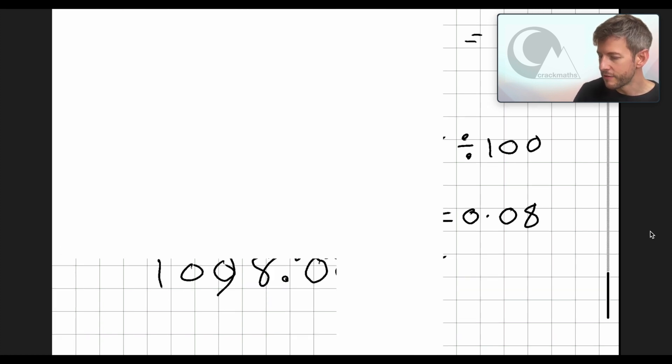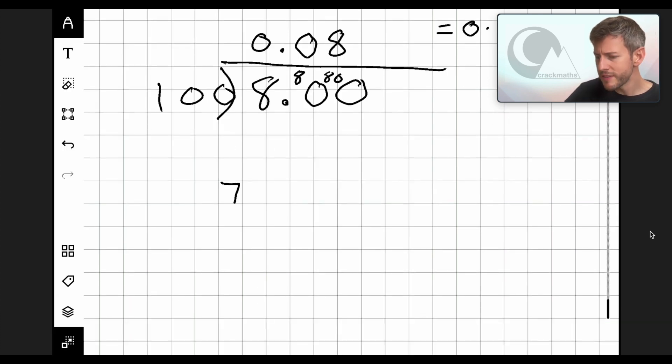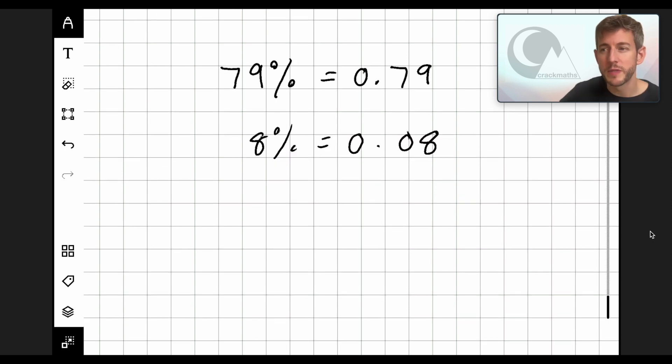OK, let's take a look at these so far. So we said 79% equals 0.79. And we've got 8% equals 0.08. So there is a pattern with percentages and decimals and that is that if we think about this as pence, the unit always becomes like the 1p and the 10 always becomes like the 10p. So with 8% there was just a unit, so that became like 8p. OK, let's have a go at another one.